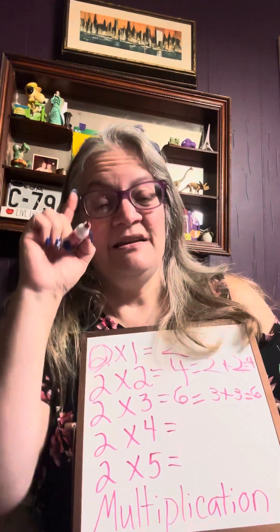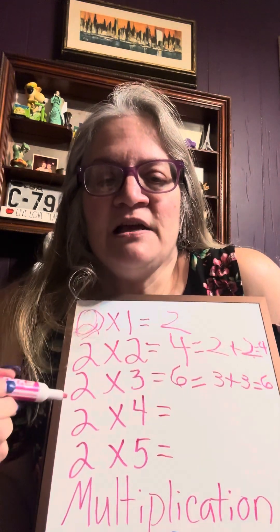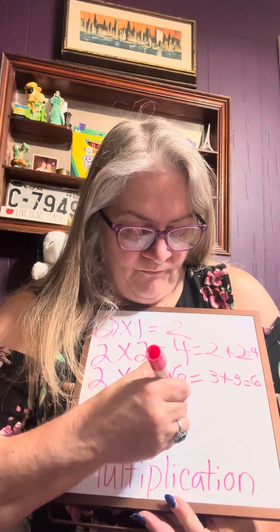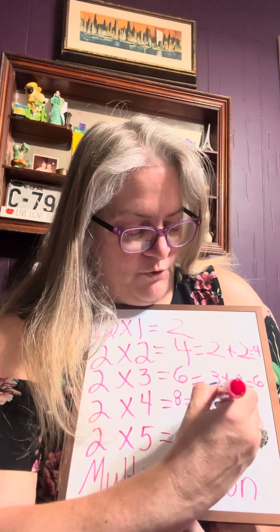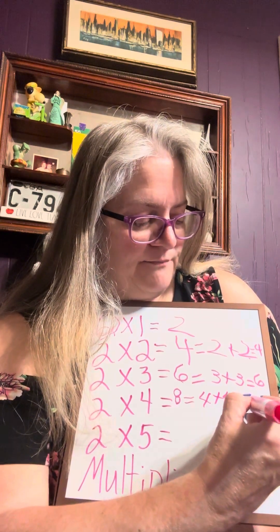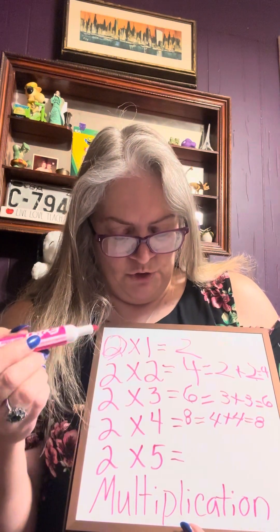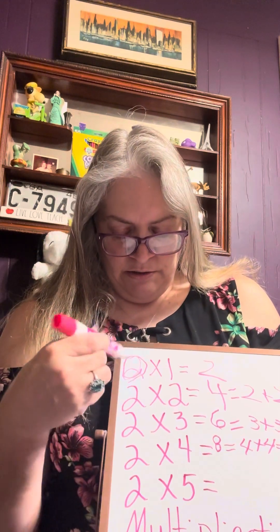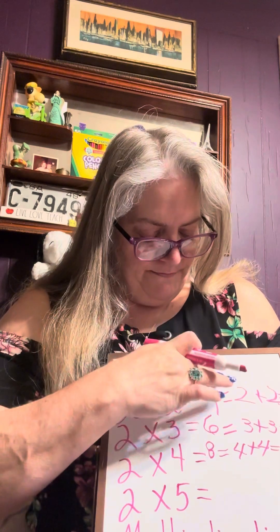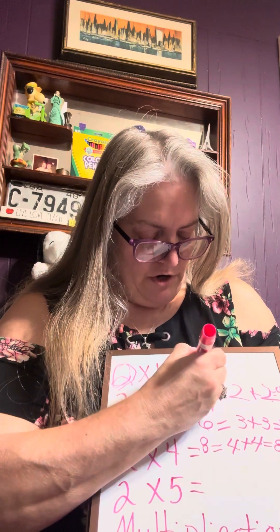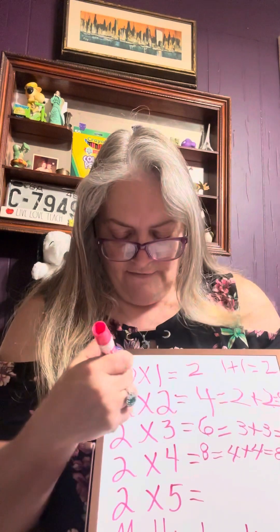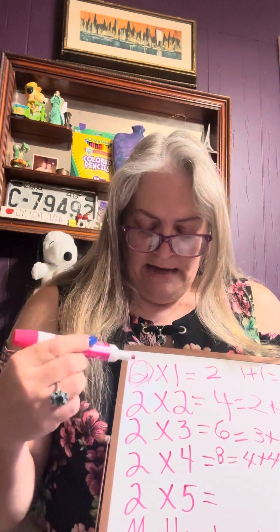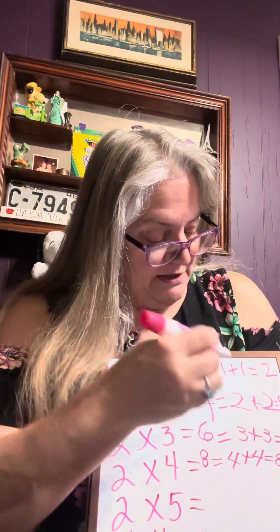That also equals six. Move my hair so you can see — two times four equals eight. It's basically two fours, so four plus four equals eight. You have two fours, two threes, two twos, and two times one is basically one plus one equals two, because you have two ones.